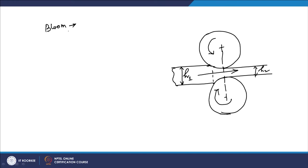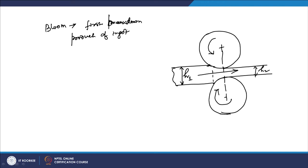The bloom is the first breakdown product of an ingot. Its cross-sectional area is greater than 230 cm² and its width is equal to its thickness.